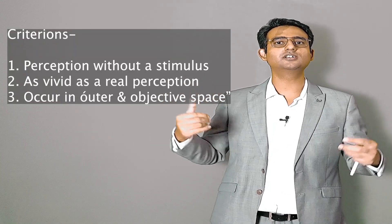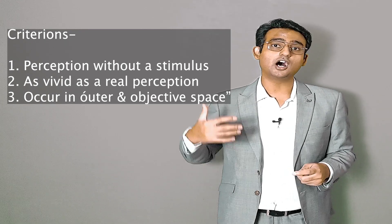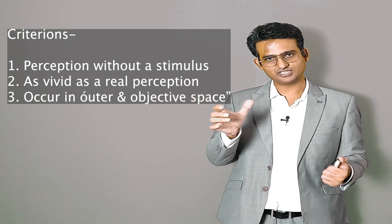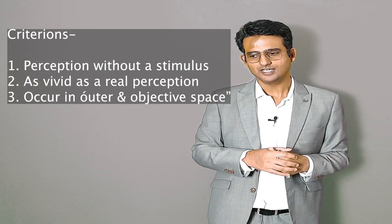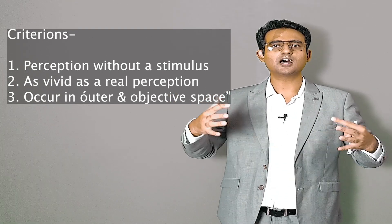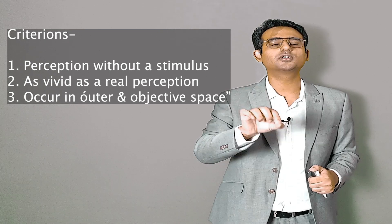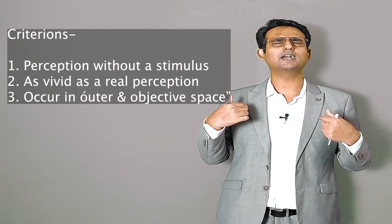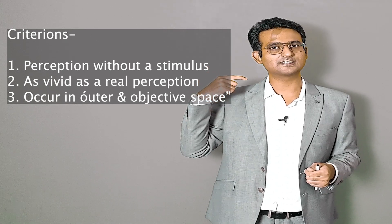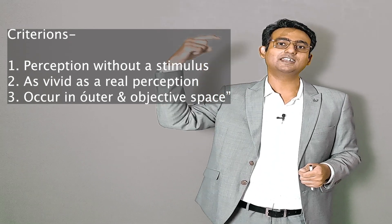The third criterion is that hallucinations occur in the outer and external world — sometimes called outer and objective space. Anything happening outside my body is outer and objective space. In contrast, when I close my eyes and see my mother's face within my mind, that is inner and subjective space. For a perception to be a hallucination, it must occur in outer and objective space.